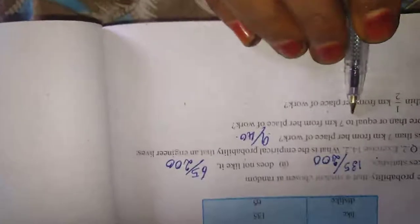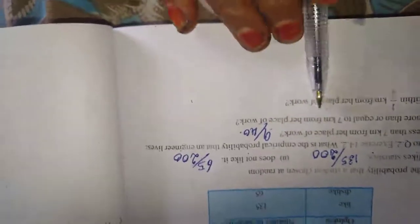More than or equal to 7 kilometers from her place of work. First number is less than 7. So more than or equal to 7, balance we have 31. So 31 divided by 40. Within half one kilometer from her place, the probability is 0 by 40. So it will be 0.